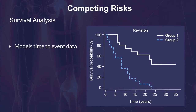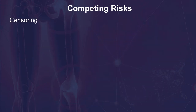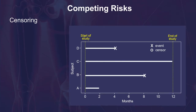In survival analysis, we model and analyze time-to-event data. Time-to-event data refers to data that involves an event, and the outcome of interest is the time until the event occurs. Survival analysis estimates the survival function, which is the probability that a patient does not experience the event of interest at a given time. In a typical follow-up study, only a small subset of patients will experience the outcome of interest. For the remaining individuals, the time-to-event will be unknown. This condition is called censoring.